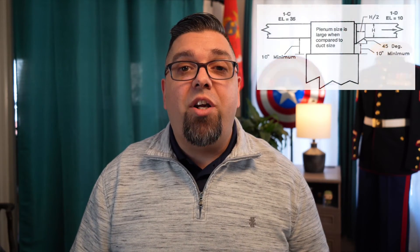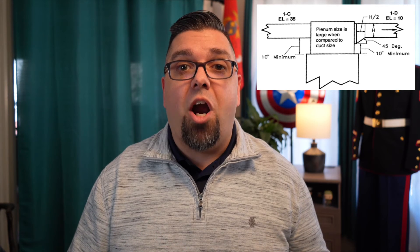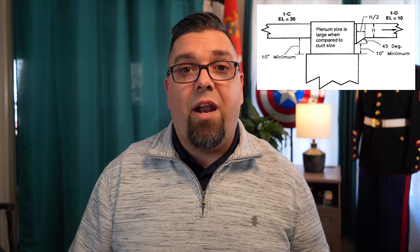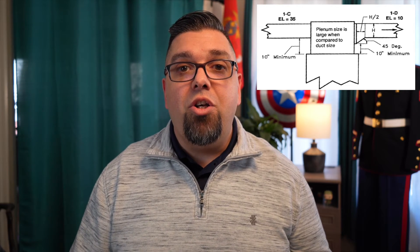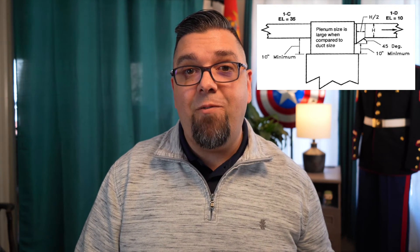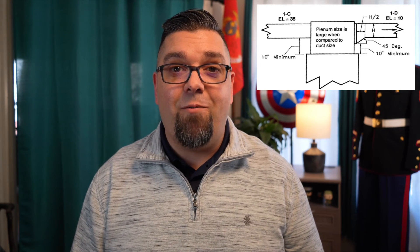The number one place to look for high fitting values is as close to the air handler as you can — the typical plenum starting collar. If that's a bull head tee, you're going to have serious restriction and a high equivalent length value. But if you come off that plenum starting collar going into the trunk at a 45-degree angle so it's easy for the air to make the turn, you could knock a 120-foot bull head tee fitting all the way down to 10 feet very easily. And maybe now your duct work is sized right for that smaller system.